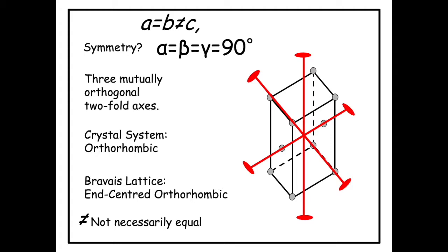Although the lattice parameters show a = b ≠ c with all angles 90 degrees — which might suggest tetragonal — the four-fold symmetry is absent, so we cannot call it tetragonal. It is orthorhombic. The 'not equal' sign in orthorhombic (a ≠ b ≠ c) only means 'not necessarily equal'; sometimes they can be equal accidentally. This is a good example that symmetry dictates the lattice type, not simply the unit cell size and shape.